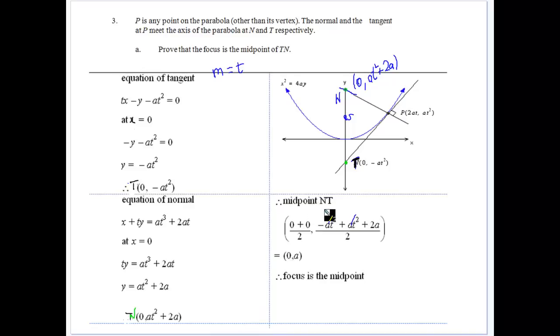What's the midpoint of NT? Well, we sub the values in. Well, obviously it's going to be 0 because it's along the y axis. And minus at squared plus the at squared plus 2a on 2. Well, they will cancel. And the 2 cancels. So the focus is the midpoint, which is what we want to find.